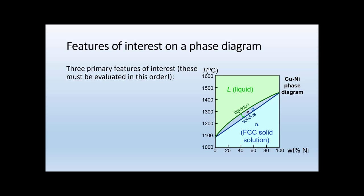Now let's talk about some features of interest on a phase diagram — basically why and how we use one. There are three primary features of interest, and it's important to remember that these must be evaluated in the order I'm going to present them. The first is: which phases are present? We locate the composition on the x-axis and the temperature. For example, at 20 weight percent nickel and 1400°C we have liquid; at 1050°C at the same composition we'd have only alpha; and at 1200°C we'd have two phases — both liquid and alpha.